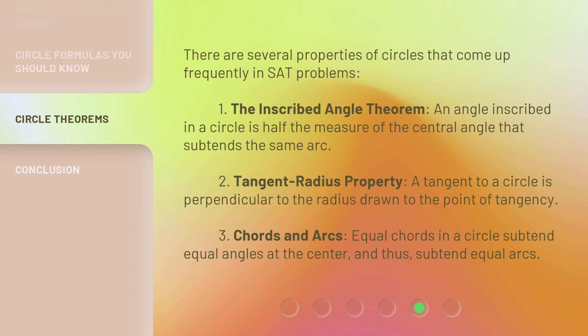3. Chords and Arcs: equal chords in a circle subtend equal angles at the center, and thus, subtend equal arcs.